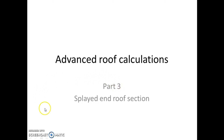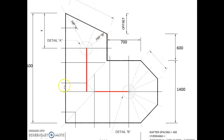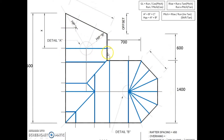In this video we are looking at the splayed end roof section of the advanced roof practical. Here's our plan that we've been working on. We are zoomed in a little bit just so we can get a slightly bigger view, so we've lost some of the measurements around the outside but that won't affect us too much. Here are all the rafters we have already worked out in the previous videos, and here are the four formulas we're going to be using to work out everything we need in this splayed end.